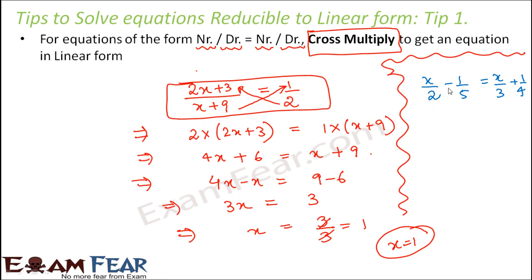This equation is numerator by denominator minus numerator by denominator, but here we said it should be numerator by denominator equal to numerator by denominator. So in this case this rule will not be applicable. So you should not start cross multiplying here.